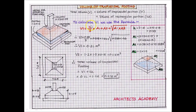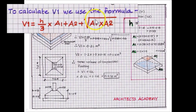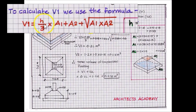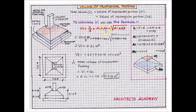To calculate the volume of the trapezoidal portion V1, we will use the formula: V1 = h/3 × (a1 + a2 + √(a1 × a2)). Now let us see what h, a1, and a2 are by referring to the sketch.